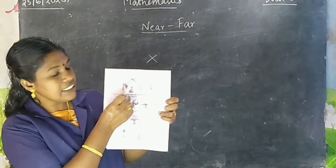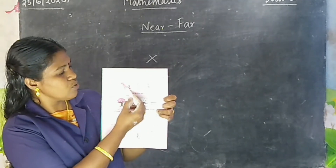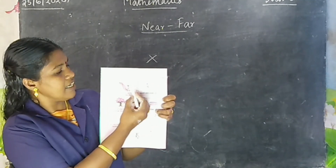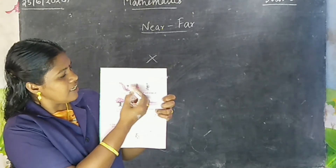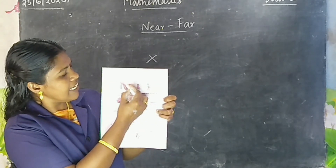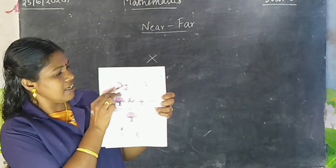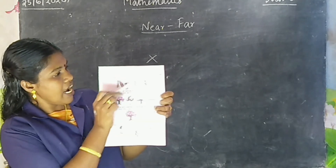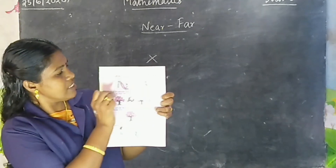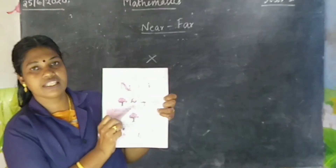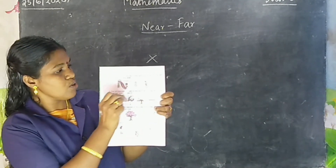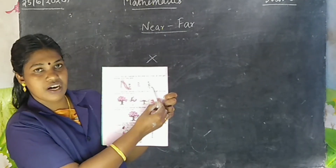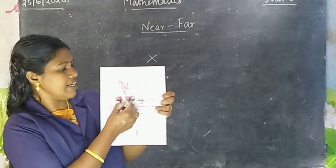Tick the girl nearest to the slide. This girl is nearest. And this girl is farthest. Nearest means e-tum adutth, farthest means e-tum dhuri. And cross the girl farthest from the slide.